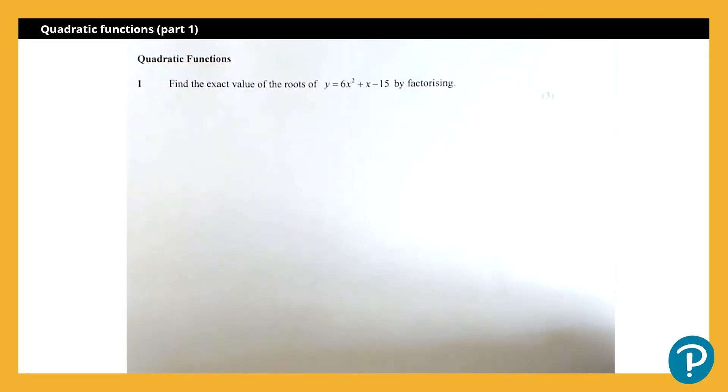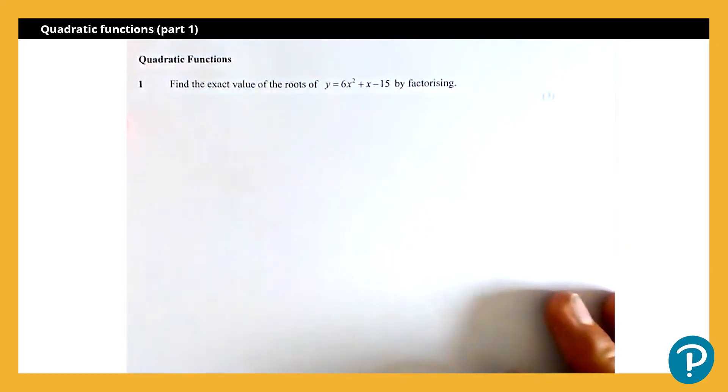Here we've been asked to find the exact value of the roots of y equals 6x squared plus x minus 15 and it's stated the method we need to use, it's stated we need to do that by factorising. So if it hadn't stated the method it needed us to use, we could pick and choose, so we might do this by completing the square or by using a quadratic formula, but here it has asked us to do it by factorising, so that's what we're going to do.